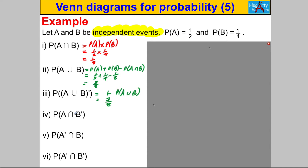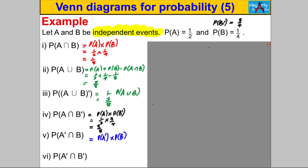For P(A∩B'), since A and B are independent, A and not-B are also independent. So P(A∩B') = P(A) × P(B') = one-half × three-quarters = three-eighths. Similarly, P(A'∩B) = P(A') × P(B) = one-half × one-quarter = one-eighth. And P(A'∩B') = P(A') × P(B') = one-half × three-quarters = three-eighths.